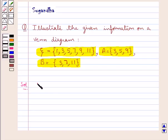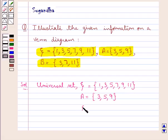We are given the universal set Xi which is the set containing elements 1, 3, 5, 7, 9, 11 and we have a set A which has the elements 3, 5, 9. We have a set B with elements 3, 7, 11.